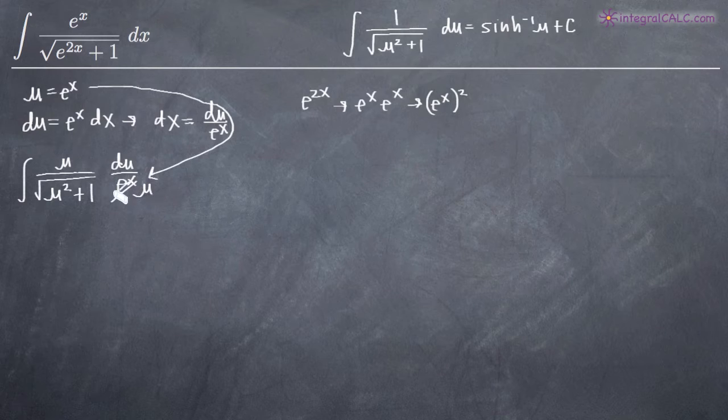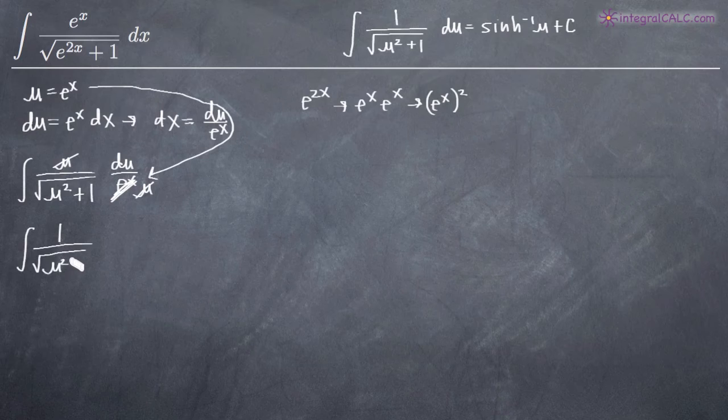So we change it into u and now we have a u in the denominator and a u in the numerator which will cancel with one another. So what we're left with is the integral of 1 over the square root of u squared plus 1 du.